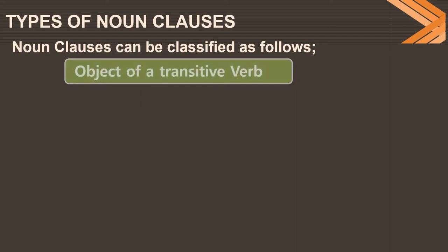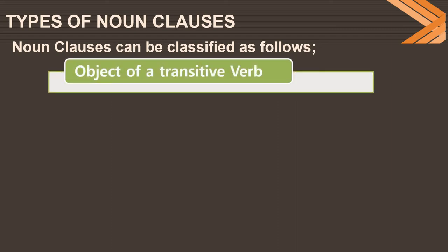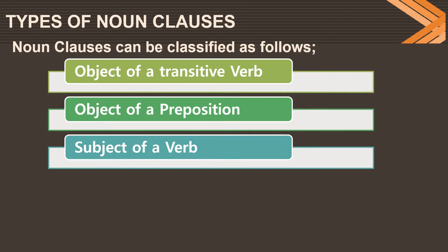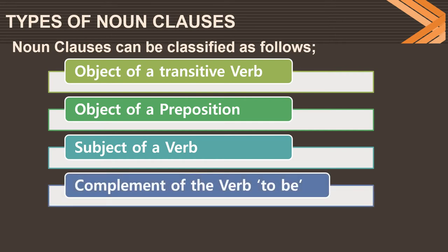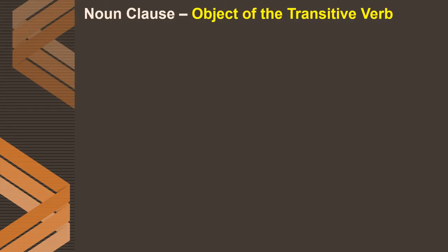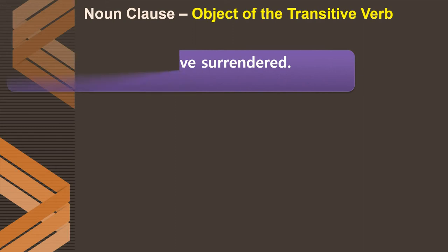What are the different types of noun clauses? There are five types, depending on the position of the clause: object of a transitive verb, object of a preposition, subject of a verb, complement of the verb 'to be,' and a clause in apposition to a noun or pronoun. We shall see each type in detail.